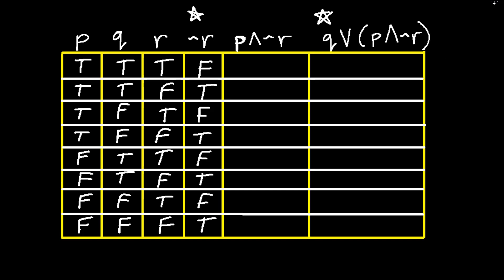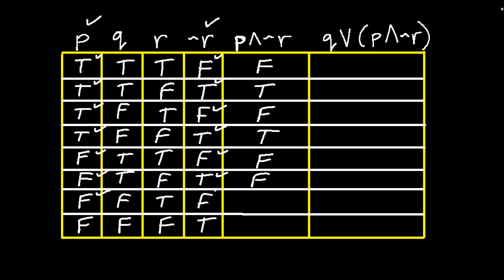For the next column of the table we are going to determine the truth values for p and not r. Keep in mind, 'and' is a conjunction — both need to be true for this column to be true. So we have true and false — false. True and true — true. True and false — false. True and true — true. False and false — false. False and true — false. False and false — false. False and true — false.